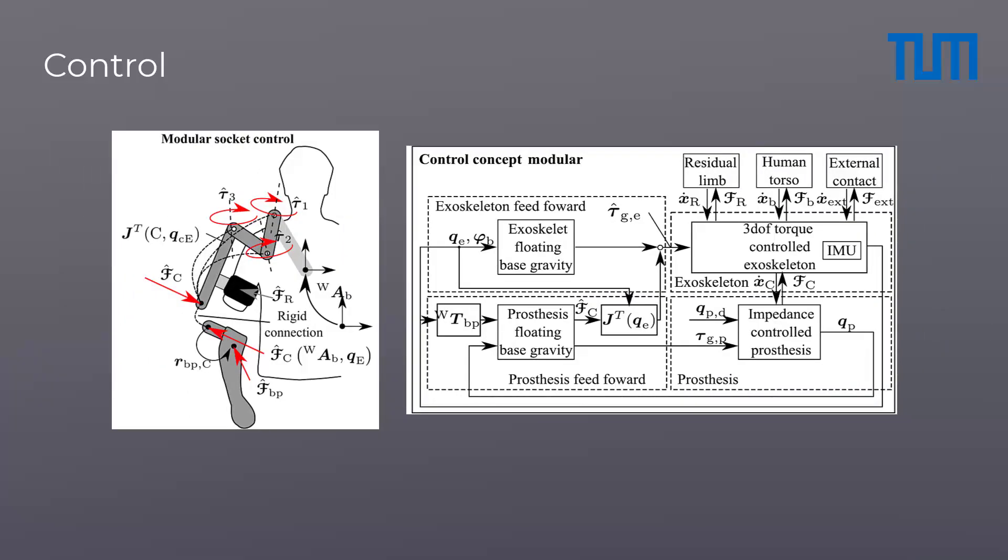The modular controller considers prosthesis and exoskeleton as two separated systems, which are connected by a wrench FC. The advantage of the modular controller is to allow the exchange of prosthetic devices without regenerating the whole model structure.